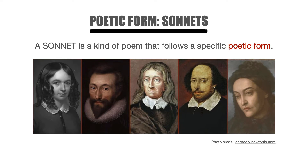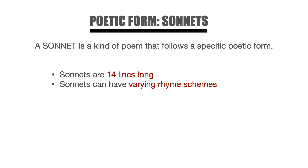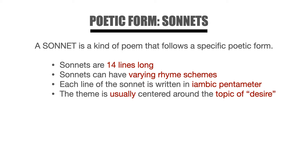A sonnet is one of the most famous forms of English poetry. A traditional English sonnet is 14 lines long. The rhyme scheme of a sonnet can vary from sonnet to sonnet. Each line of a sonnet is written in iambic pentameter, and we'll talk about what that means in just a moment. The theme of a sonnet is usually centered around the topic of desire.